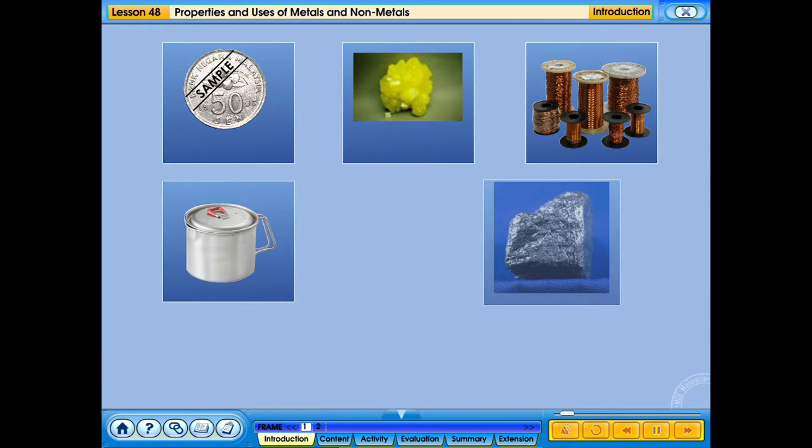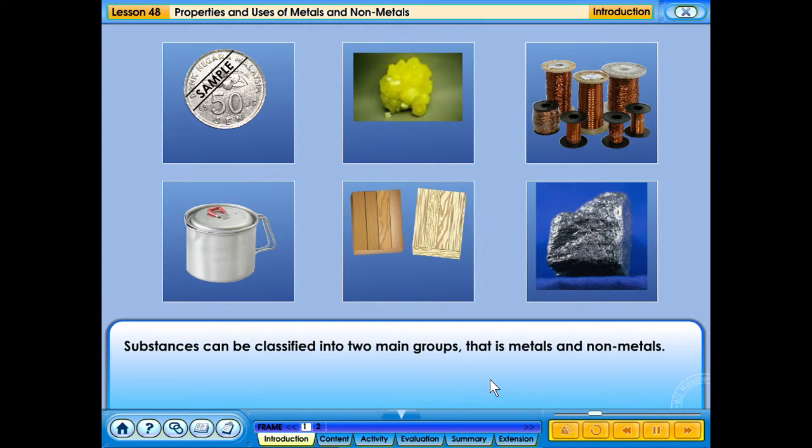Substances can be classified into two main groups, that is, metals and non-metals.